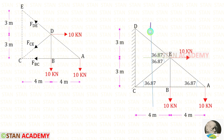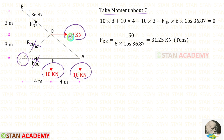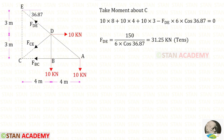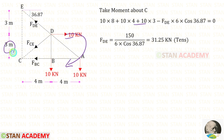Now let us make the third section like this and take the right side part for analysis. Let us take a moment about C. When we take moment about C, we should not consider FBC and FCE. The remaining forces are 10, 10, 10, and FDE. About point C, this 10 is acting in the clockwise direction so it will be positive with distance 8, and this 10 is also acting in the clockwise direction with distance 3.